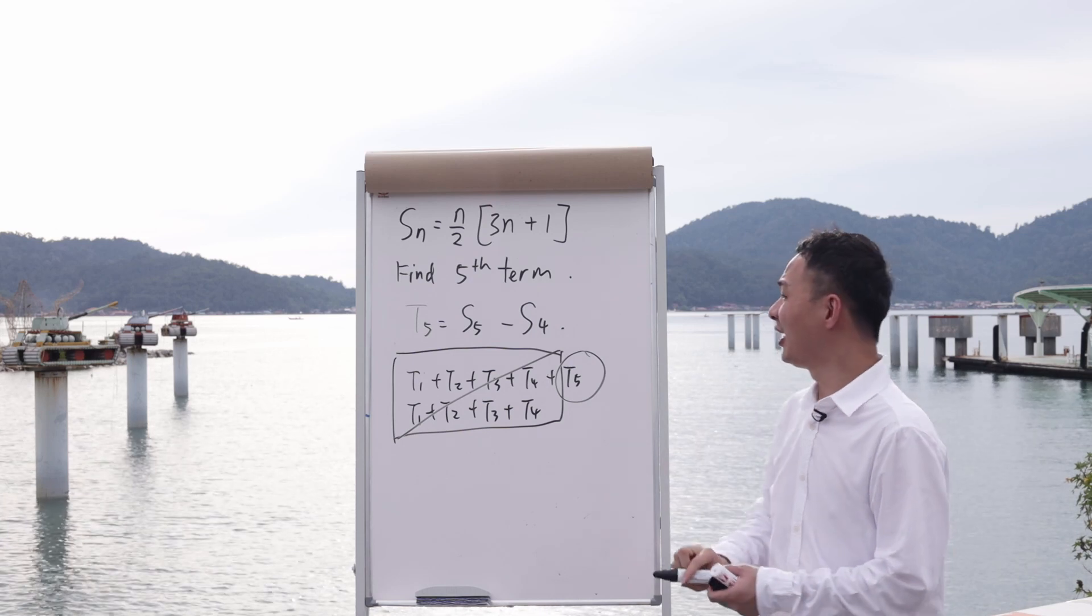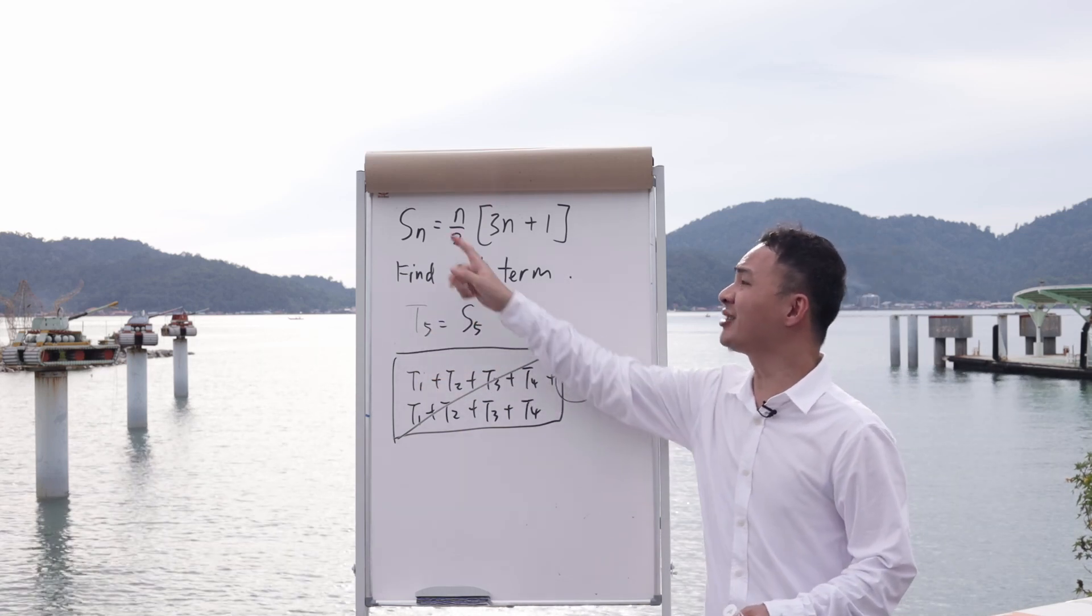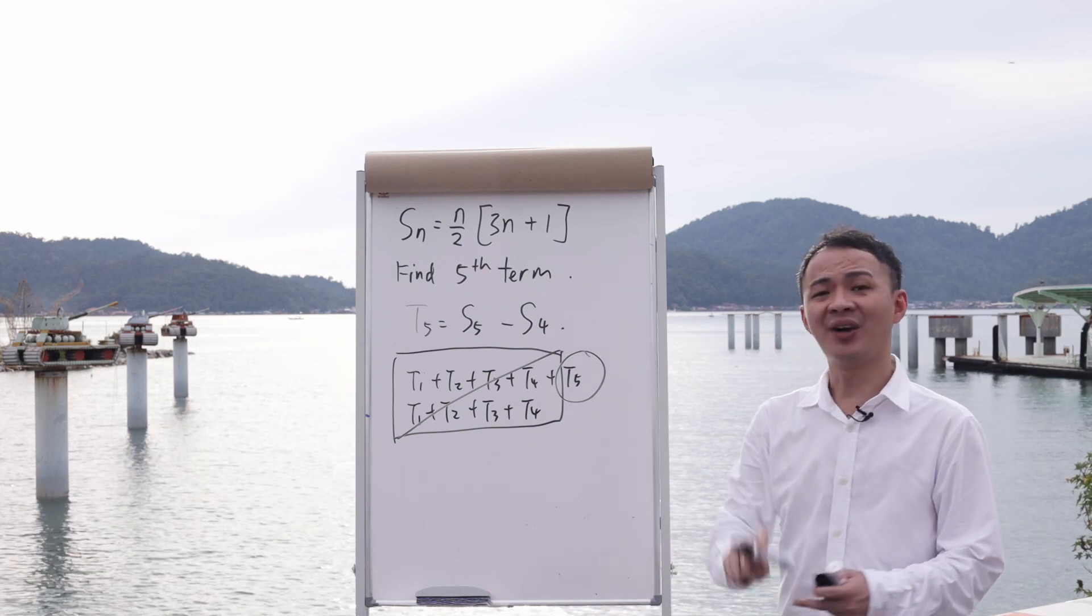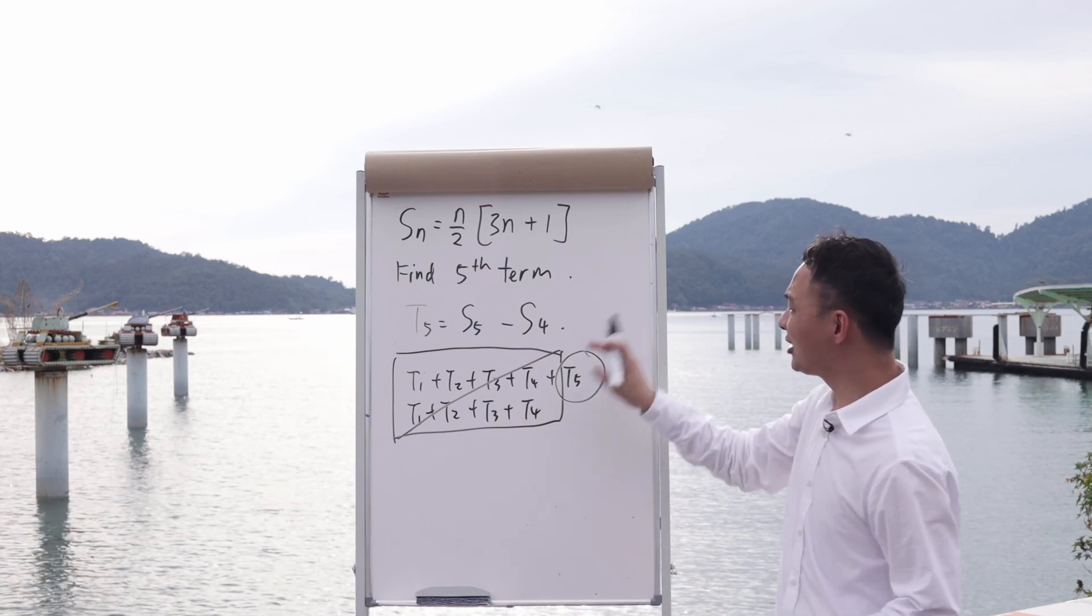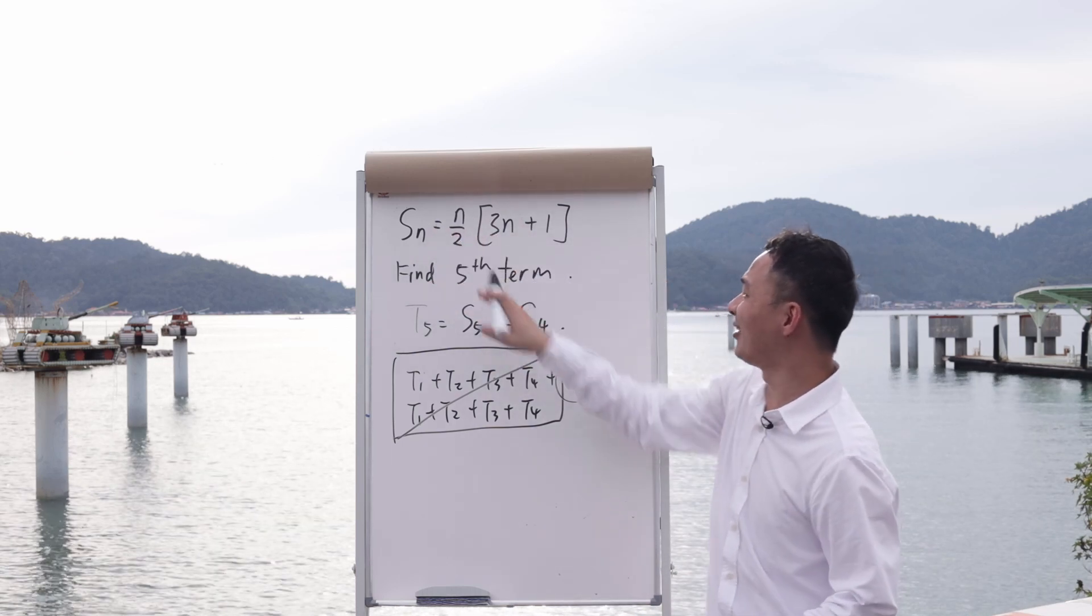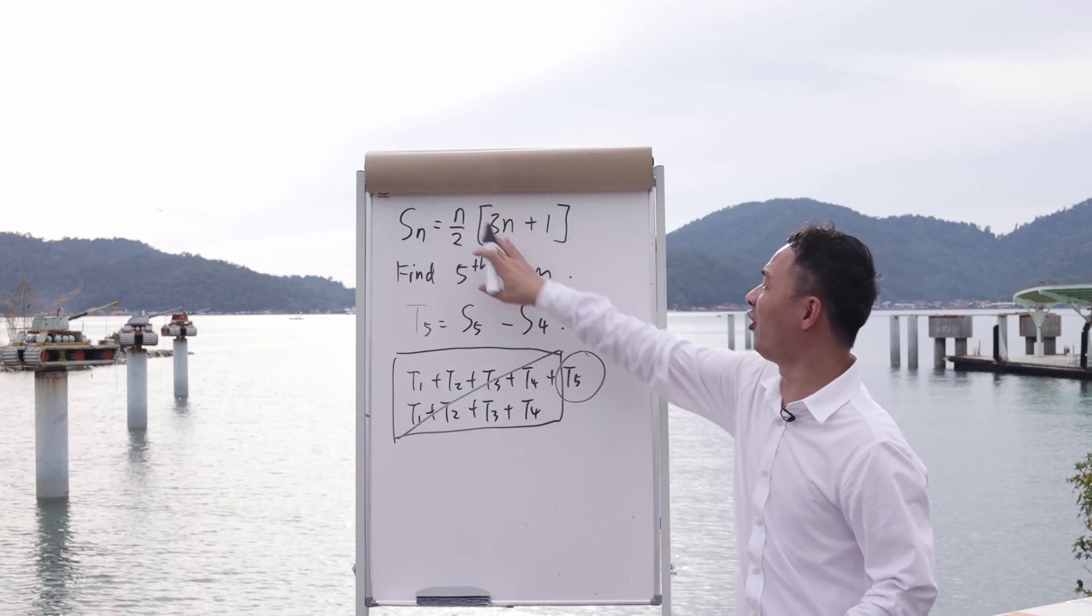If you understand this concept, the rest will be very easy. You just need to substitute 5 into the equation Sn, and then substitute 4 into n.